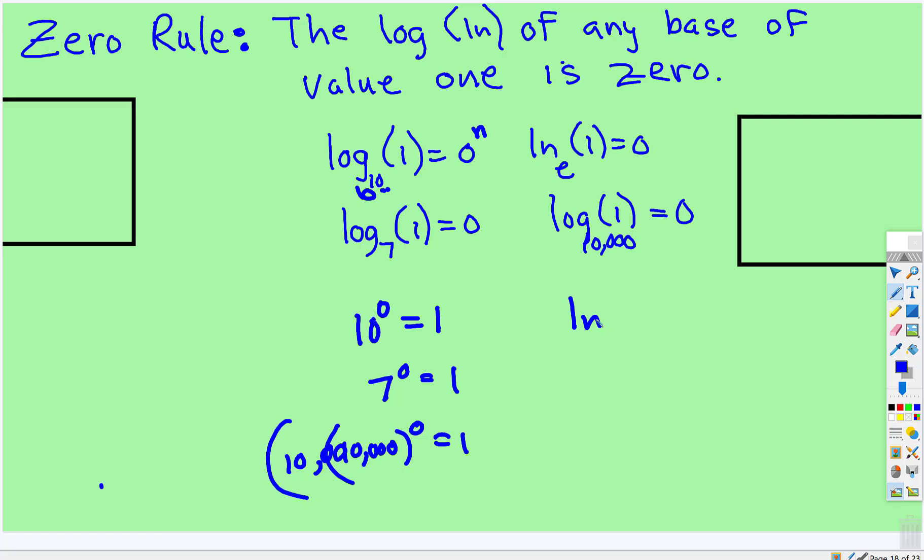Even with natural log, e to the zero - e is just a number, and any non-zero number to the zero power equals one.